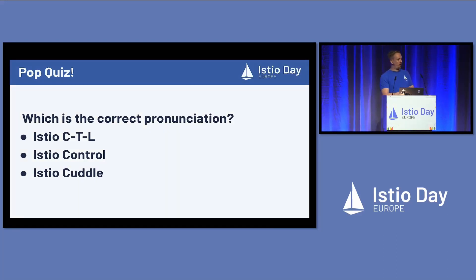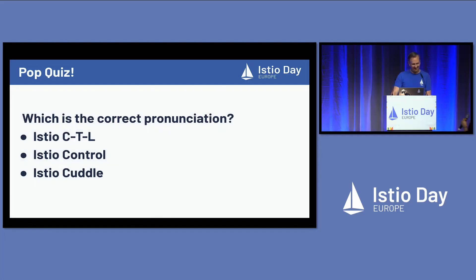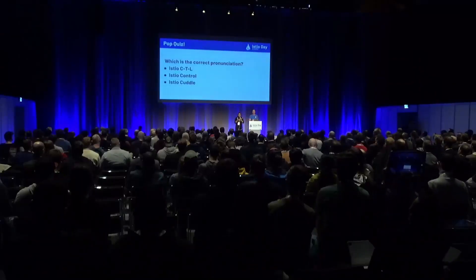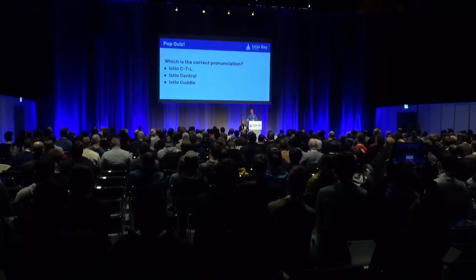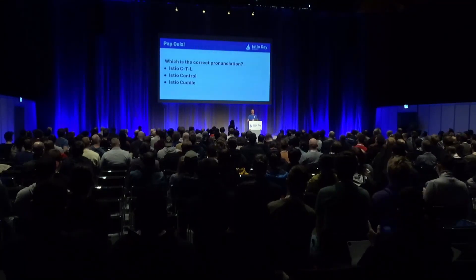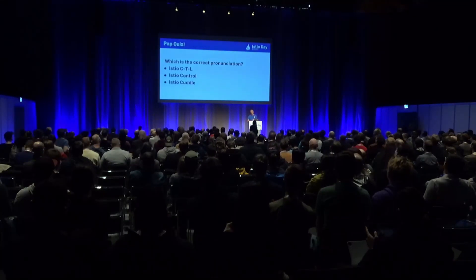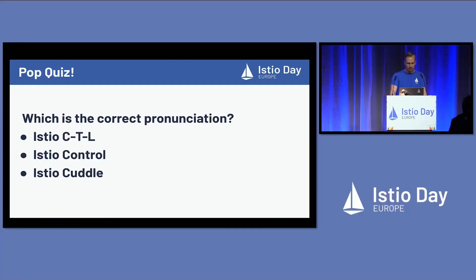Which is the correct pronunciation? Is it IstioCtl, Istio control, or Istio cuddle? The tough ones have special prizes. The correct answer is none of the above, because we never defined it. It's Istio with some consonants at the end — no one actually knows how to say it. I own the tool and I don't know what it's called, but we hope you enjoy using it.